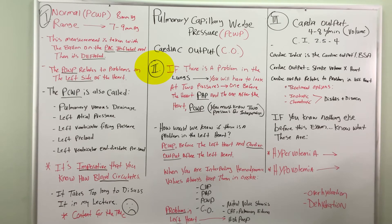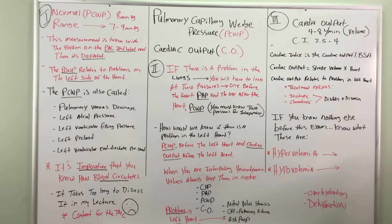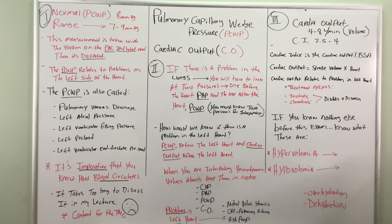Rule number two: I'm going to give you some examples of how this works. If there's a problem in the lungs, you will have to look at two pressures — one before the heart, which is the PAP, and one after the heart, which is the PCWP. You must know two pressures when it comes to hemodynamic interpretations. How would you know if there is a problem in the left heart? The PCWP is before the left heart and cardiac output is after the left heart. You always look at the pressure before and after the anatomy where you're looking for the problem.